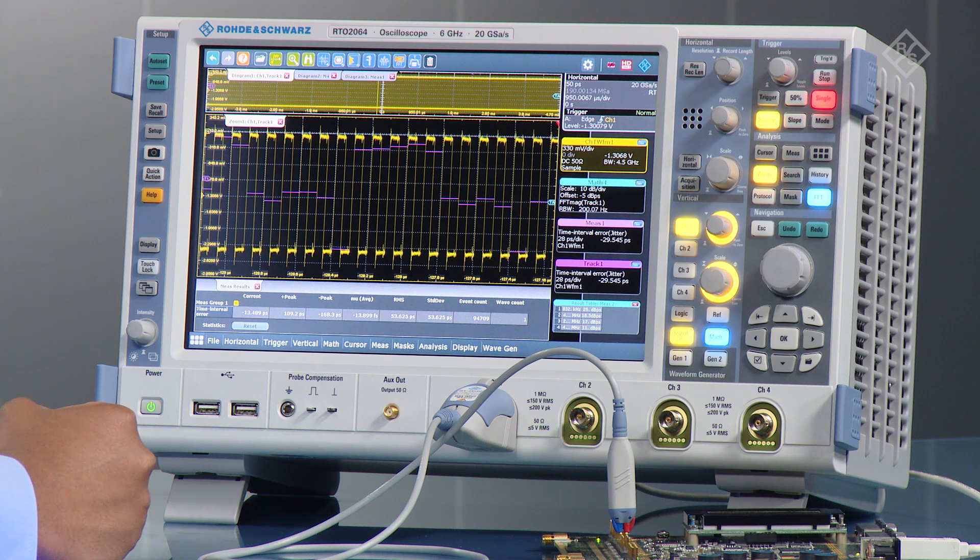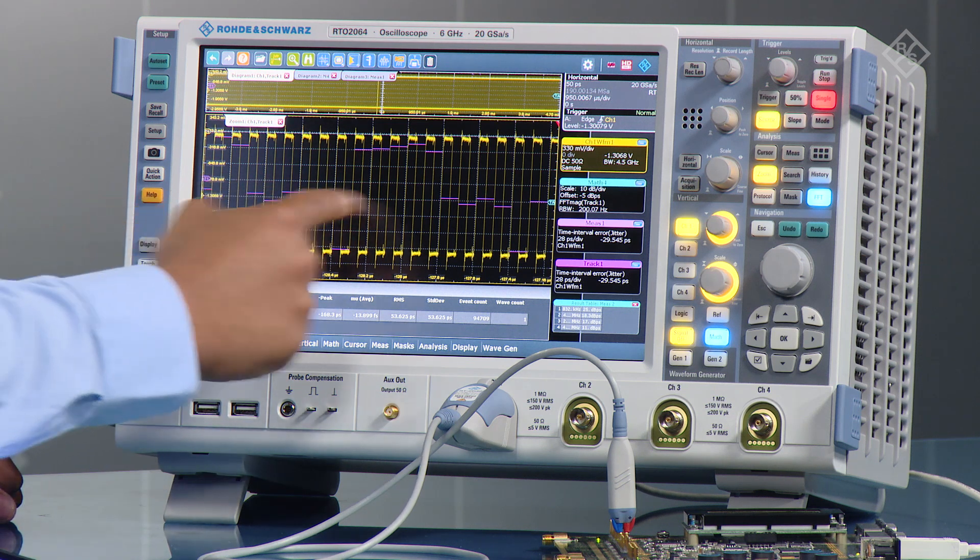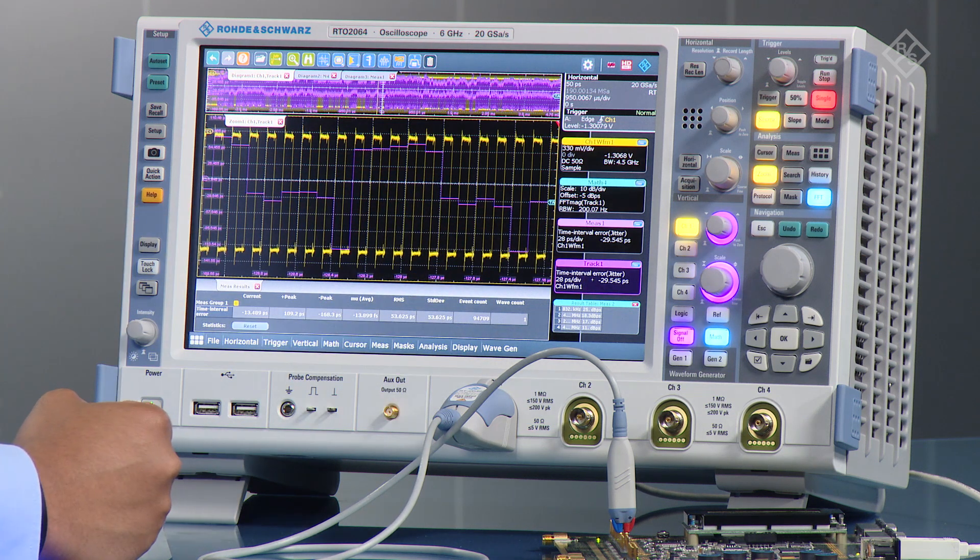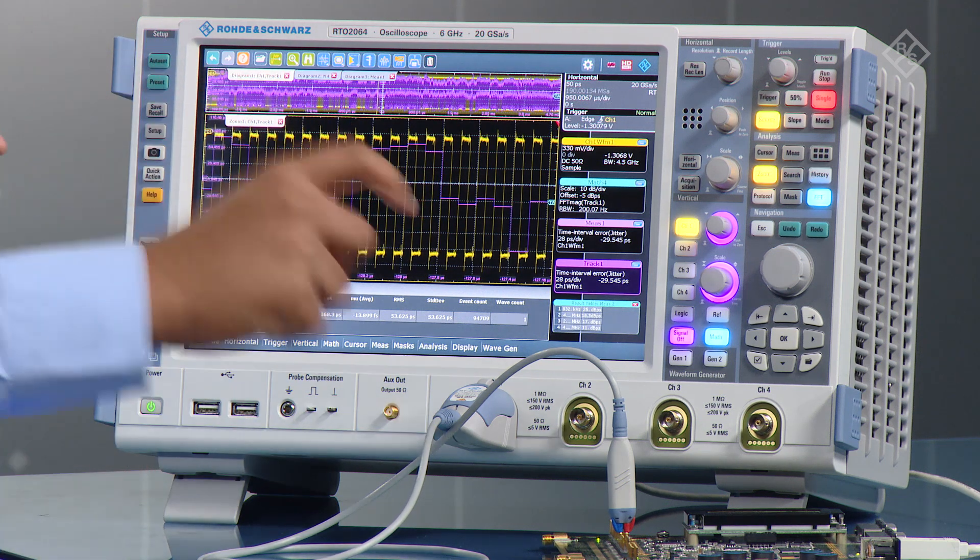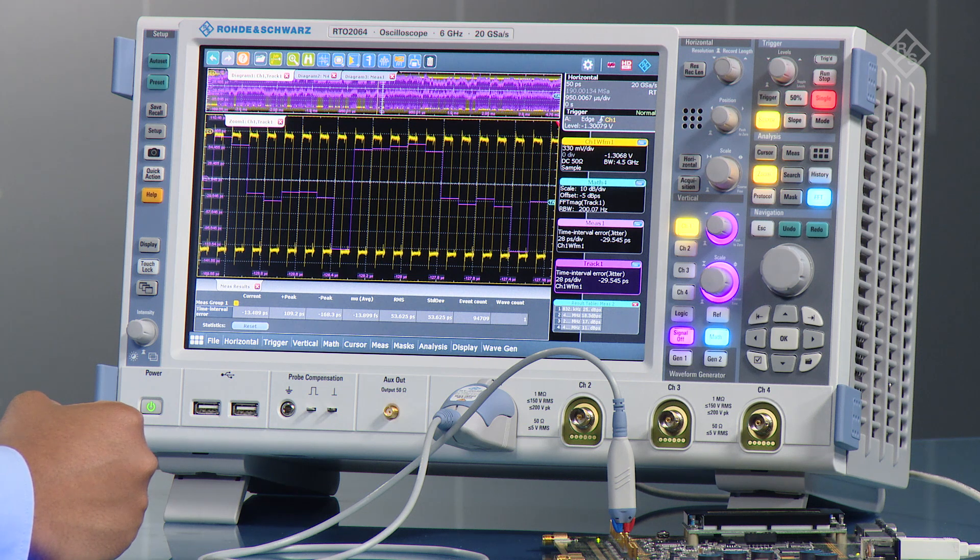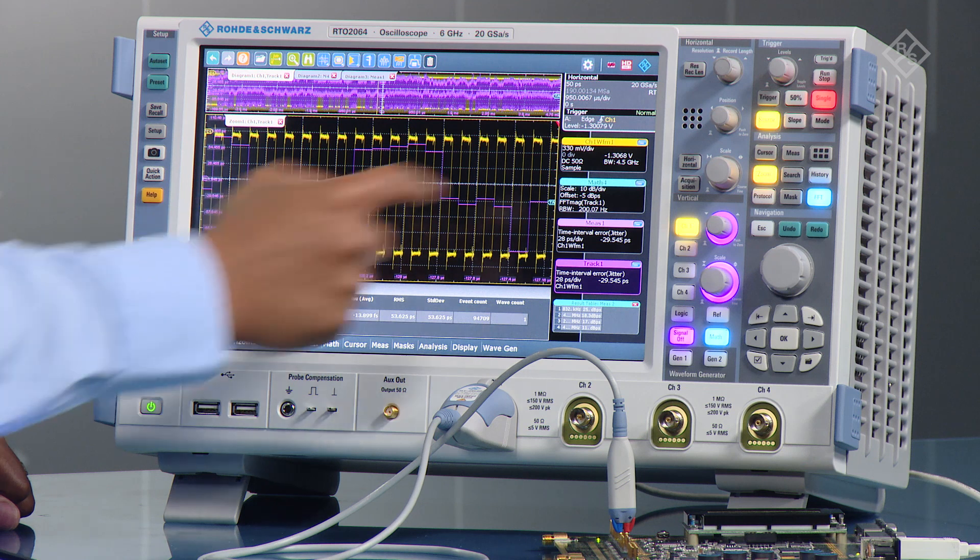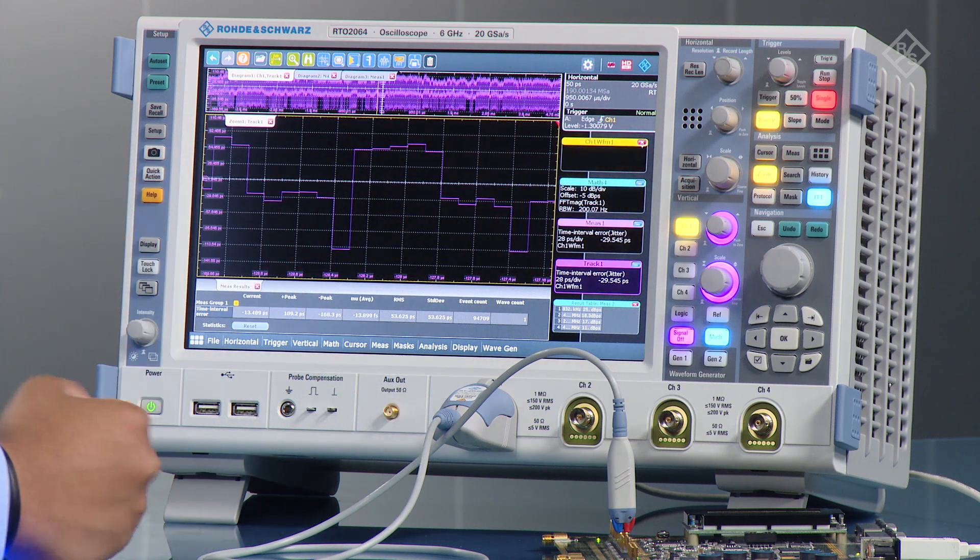What you also see is a track of the TIE, so on the purple trace there you can actually see the TIE measurement done and tracked along each of the cycles that we've actually captured and you can see there there's a definite pattern. So let me go ahead and minimize the main signal.